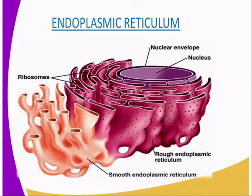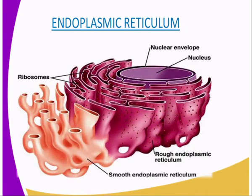The endoplasmic reticulum is a series of interconnected channels or systems running through the cytoplasm. We have two types of endoplasmic reticulum: the rough endoplasmic reticulum and the smooth endoplasmic reticulum. Some have granules called ribosomes on their surfaces and are therefore referred to as the rough endoplasmic reticulum. In our diagram, we have combined both, but the ones which have a rough surface are the rough endoplasmic reticulum.